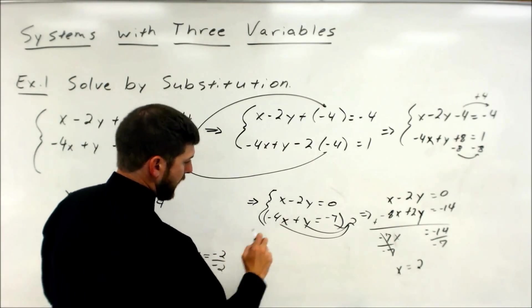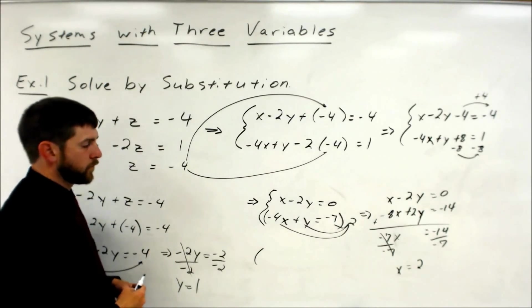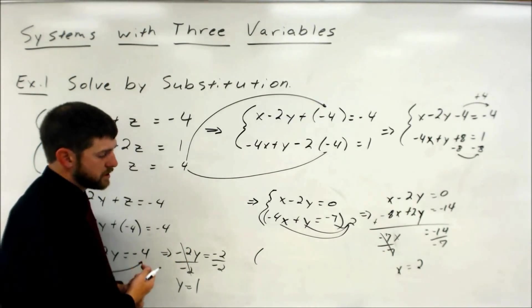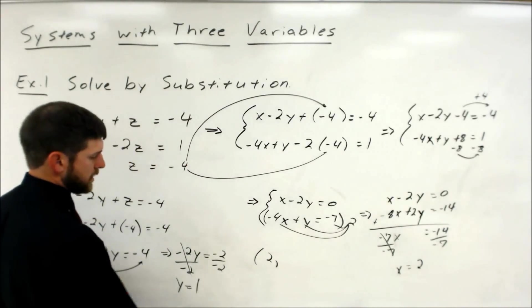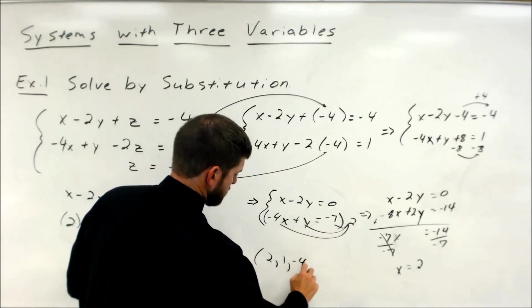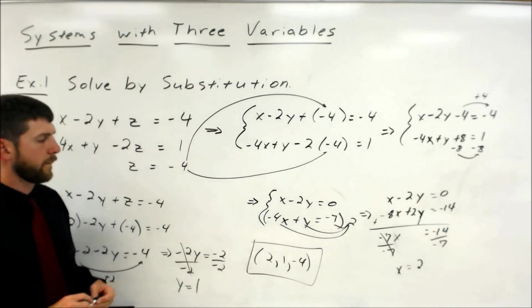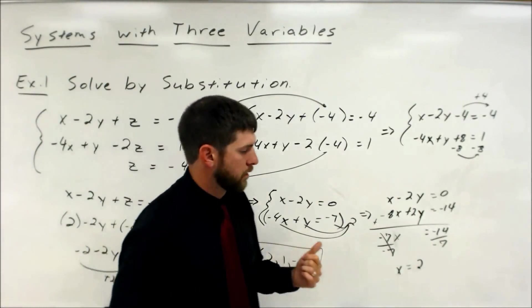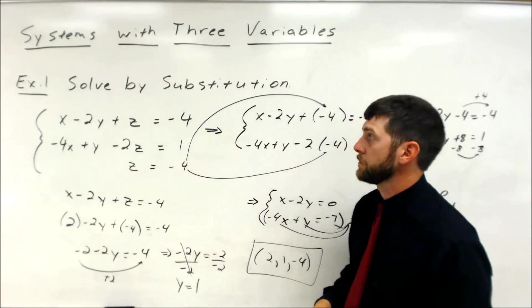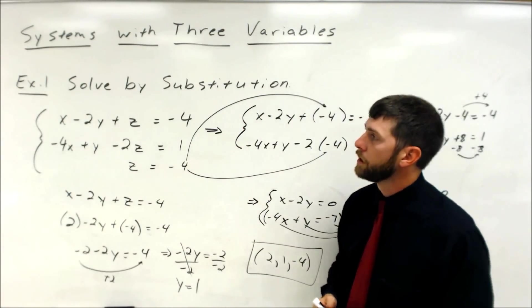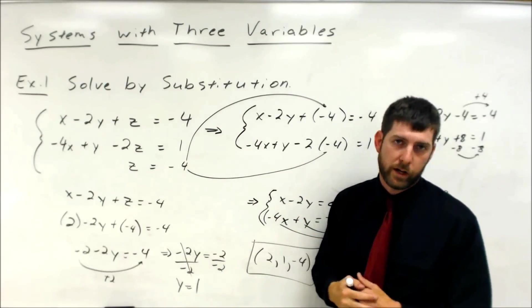Now when we write this, we want to write our answer as an ordered triple, like we saw in the graphing in three dimensions lecture. So x is 2, y is 1, z is negative 4. And that's how you solve linear systems in three variables by substitution. Next, we're going to look at how to solve it by linear combination from the get-go.